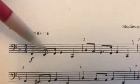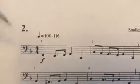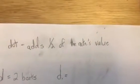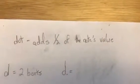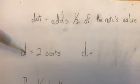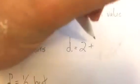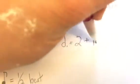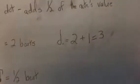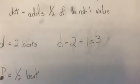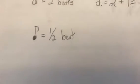Hopefully you've seen a dotted note before. What a dot does — a dot adds half of the note's value. Like you can see right here, I've got a half note drawn. A half note usually gets two beats. So if we have a dotted half note, you would have those two beats, but then add half of two beats, which is one beat. That gives you three beats for your dotted half note. Pretty simple.